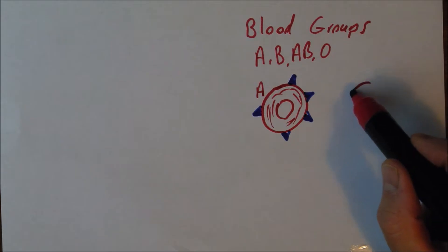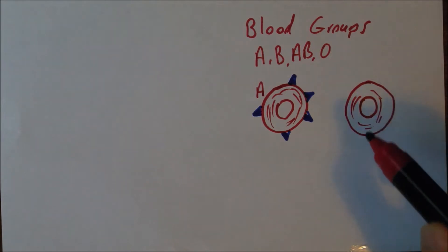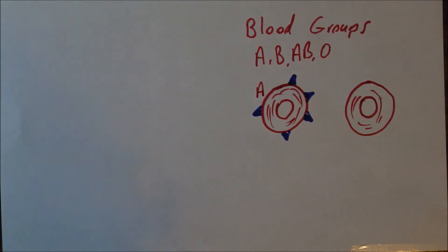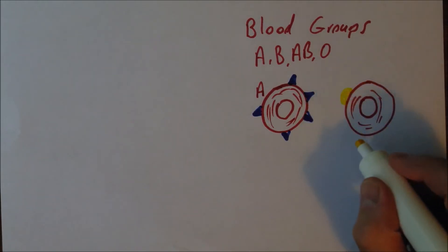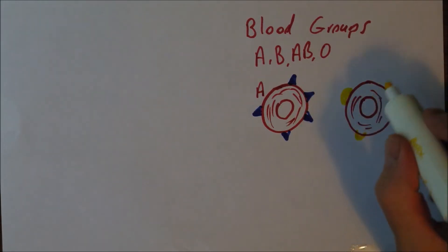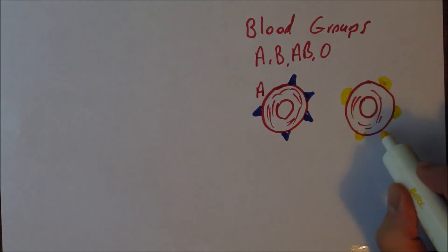Blood group B again is determined by the nature of the red cells, and in blood group B there are B antigens on the surface represented by these semicircles. So that's blood group B.